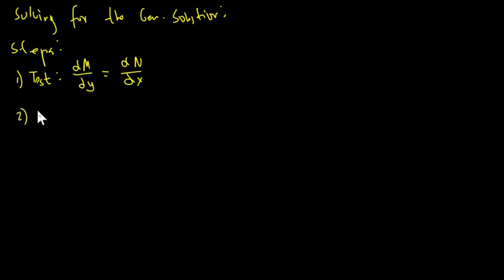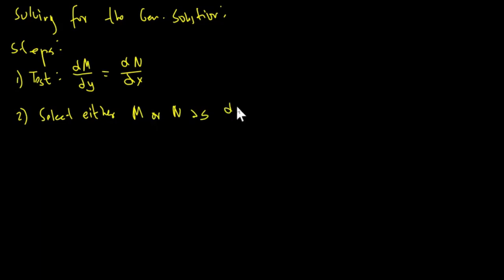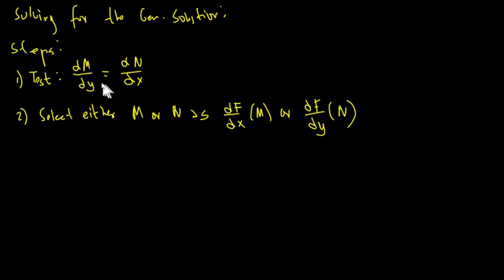After the test, if it is proven to be an exact equation, then we will select either M or N as the partial derivative of f in terms of x — this is for M — or the partial derivative of f in terms of y — this is for N. If you select M, the coefficient of dx, you get the partial derivative of f in terms of x. If you choose N, you get the partial derivative of f in terms of y.